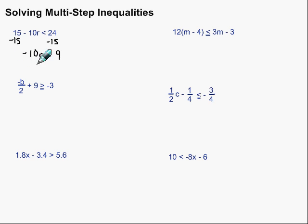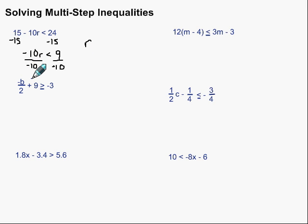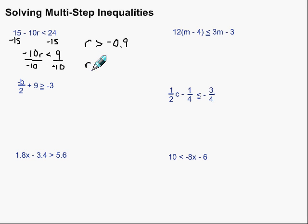Now we have a negative 10 with that R. To get rid of it, we do the opposite, which is division. So we're going to divide by negative 10 on both sides. The negative 10s are gone and we're left with just R. Remember, we divided by negative 10 on both sides, so we need to flip the inequality symbol. It becomes R is greater than — we just have a fraction there. You can divide it and get negative 0.9, or leave it as negative 9 over 10. Either one is fine.